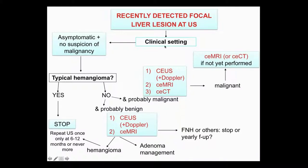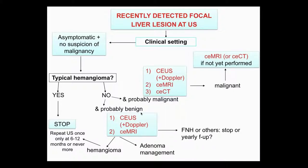If the patient is asymptomatic with no suspicion of malignancy and we detect a lesion that looks like a typical hemangioma, we don't even need CIUS - we can stop and repeat ultrasound only at long intervals or never. If it is not a typical hemangioma, then we can perform CIUS. These are not patients at risk of HCC and not patients with oncological background. If we think the lesion might be benign, we can start with CIUS or MRI, because these are healthy subjects who do not deserve irradiation with CT. Most lesions will fall into hemangioma, adenoma, or FNH categories.